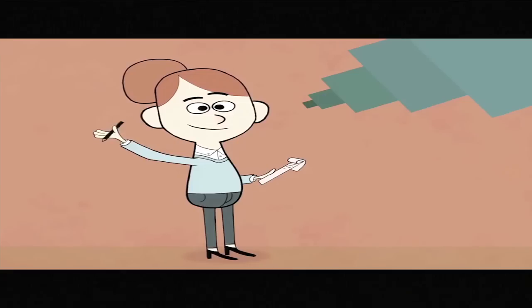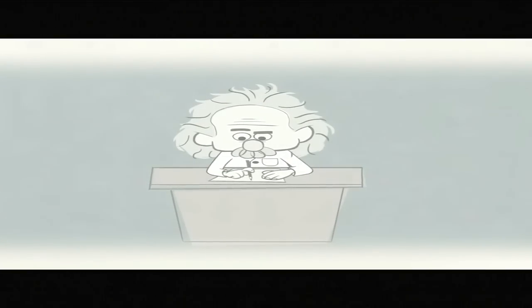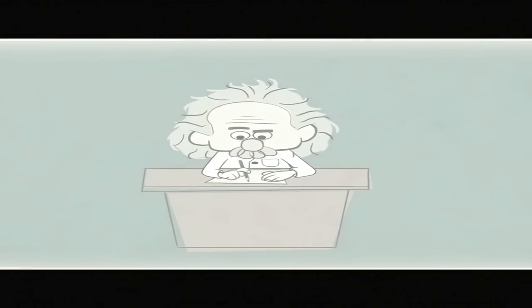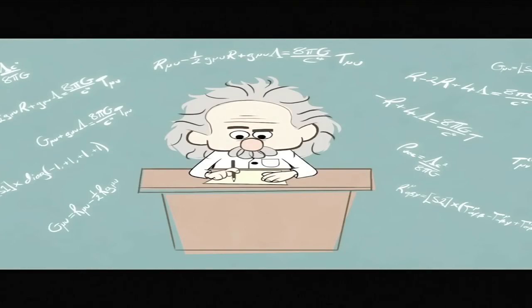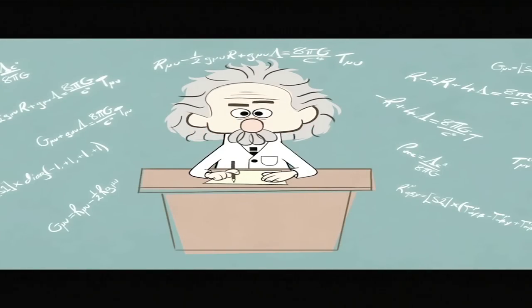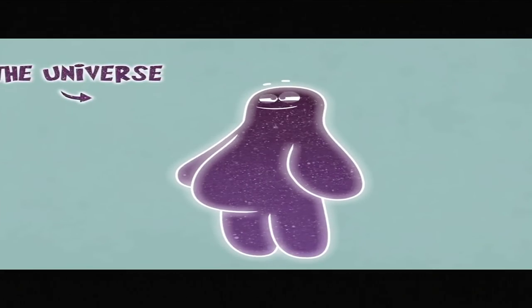The end of the universe is intimately linked to what the universe contains. Over 100 years ago, Einstein developed the theory of general relativity, formed of equations that help us understand the relationship between what a universe is made of and its shape.